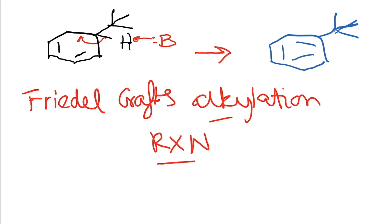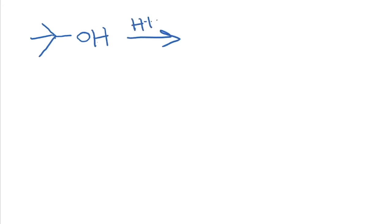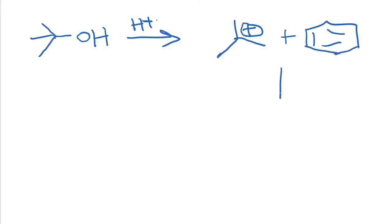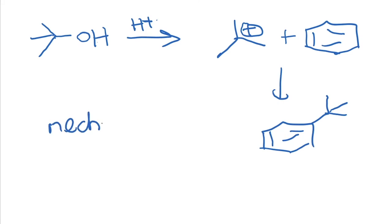Let us go back to the example of the SN1 reaction. If you imagine that a carbocation is produced when you take tertiary butyl alcohol and add H+, under these conditions you would also get a Friedel-Crafts type reaction. If you add benzene, the product that you would get is the corresponding alkylbenzene. I would urge you to go back and work out the mechanism of this reaction—this is an assignment for all of you.